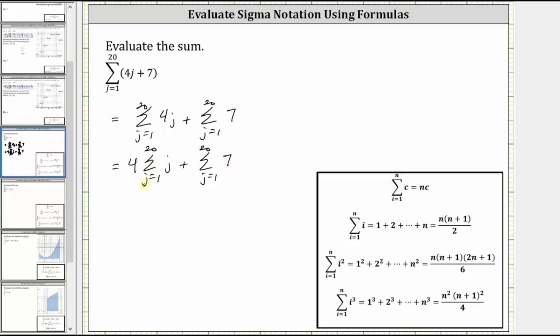Now take a look at our summation formula that's below. The sum from i equals one to n of c, where c is a constant, is equal to n times c. And the sum from i equals one to n of i is equal to the product of n and n plus one divided by two. We will use these two formulas to find our sum.